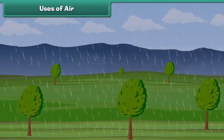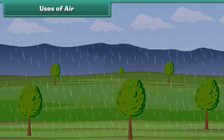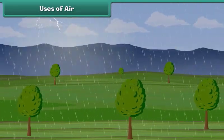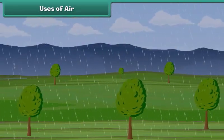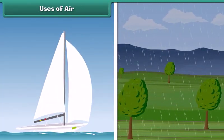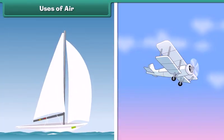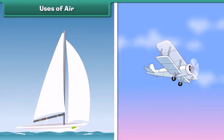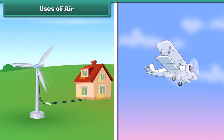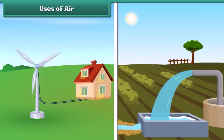Moving air is known as wind. Wind moves clouds and causes rain, and helps sailboats and gliders to move. The power of wind is also used to generate electricity and to pump water.